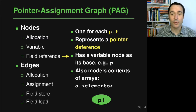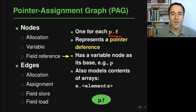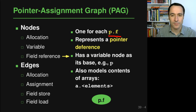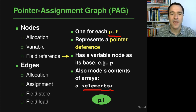The third and final kind of node are nodes for field references. For every place in the program where a field is used — where we write something like p.f — there is such a node, and it represents the pointer reference that happens when this field reference is executed. Because every field is in some object and there is always a base object, these nodes always have a variable node as their base. Arrays in Java are also modeled using these field reference nodes, with an imaginary field called 'elements' representing all elements an array can have.